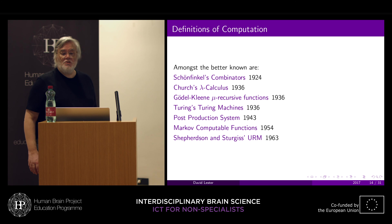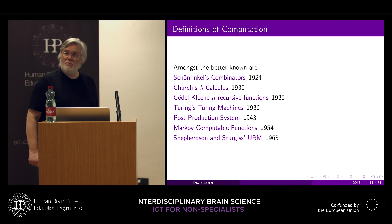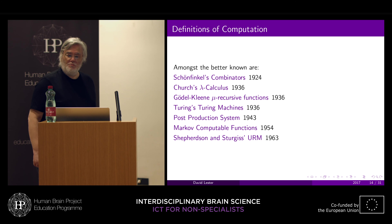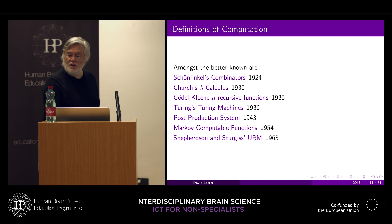Here are some of the better-known definitions. Interestingly, Schoenfinkel's combinators actually predate Gödel by six years. We get Church's lambda calculus in 1936, Gödel-Kleene recursive functions in 1936, and Turing's Turing machine in 1936. Emil Post produced post-production systems in 1943. Markov's computable functions likely predate 1954, but the Russian publication system did not publish this until around the demise of Joseph Stalin. Finally, there's the Shepherdson and Sturgis universal register machine in 1963, and the while language, a 1990s invention. All of these define computation in exactly the same way.